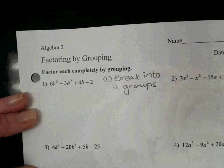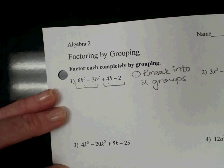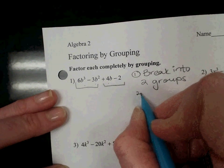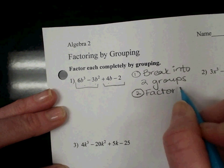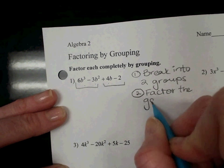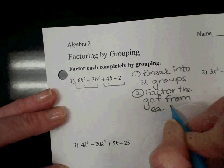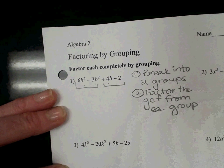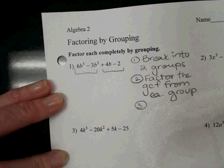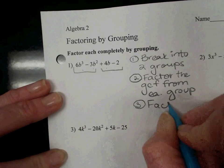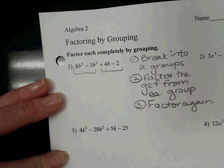So there are a few steps you can follow. Number one, you want to break your four-term polynomial into two groups. So I just use a little bracket like this to break it into two pairs, two groups. Number two, you want to factor the GCF from each group. And then number three, factor again.